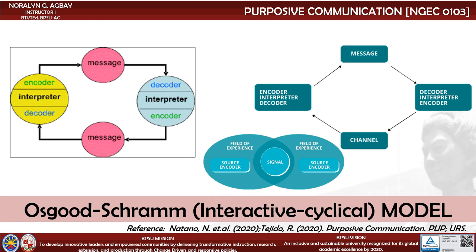The field of experience refers to what is mutually understood between the recipient and the sender. In 1955, Wilbur Schramm's model emphasized that each communicator takes on the roles of encoder, interpreter, and decoder in the communication process. Osgood-Schramm also emphasized the importance of people's fields of experience in the interpretation of meaning. People involved in communication must share a similar experience or common schematic background about the topic in order to connect with and understand each other.